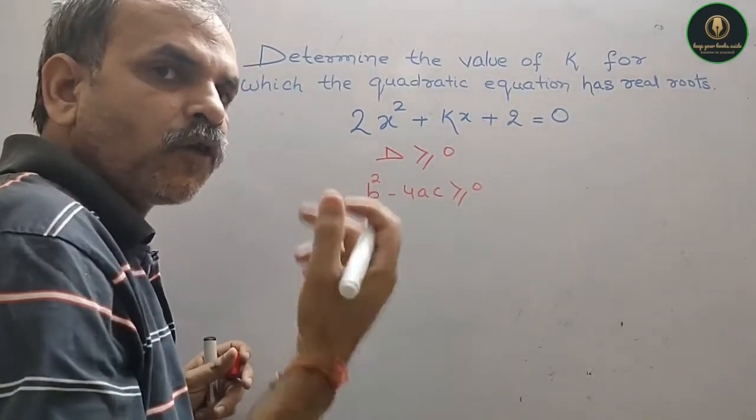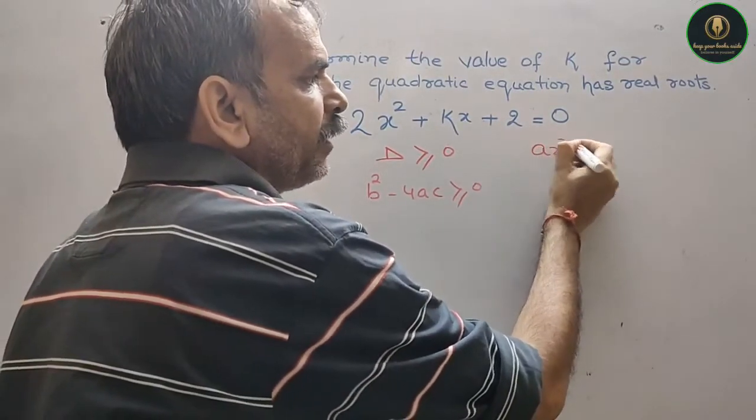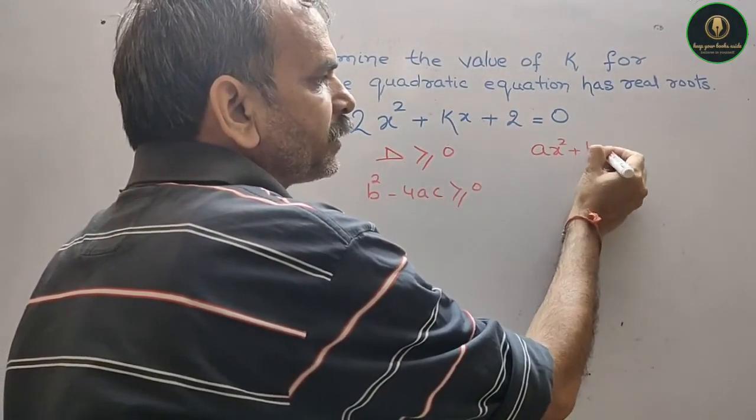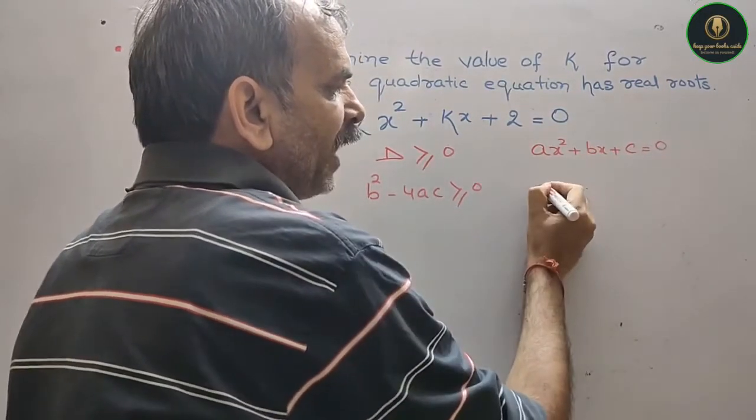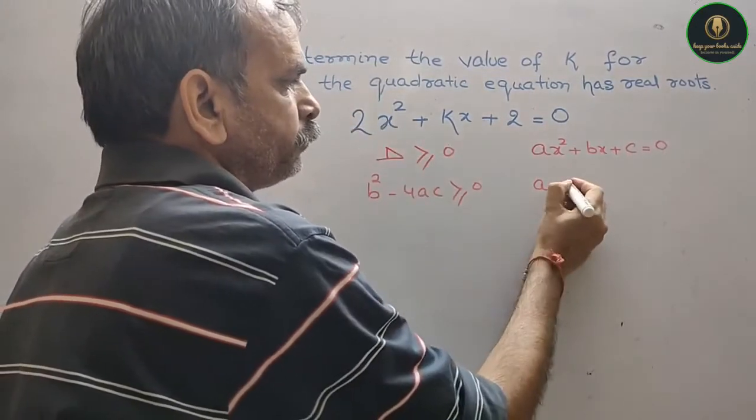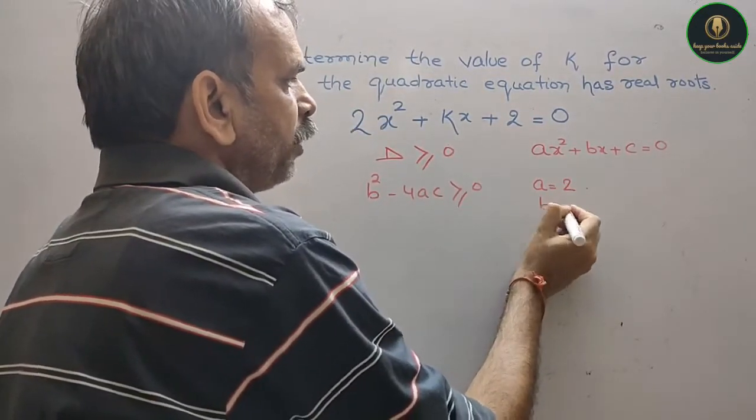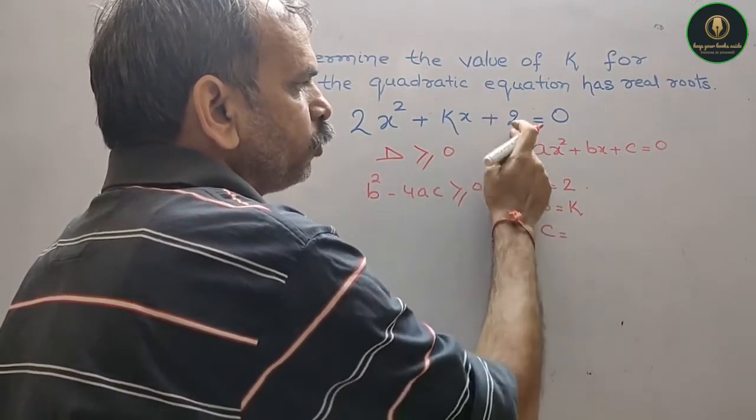Now, the standard form of quadratic equation is ax² plus bx plus c equal to 0, where a is equal to 2, b is equal to k, and c is equal to 2.